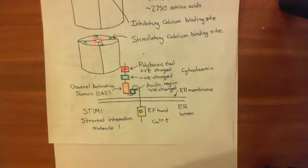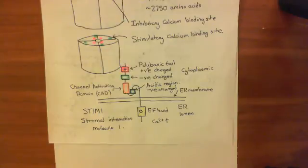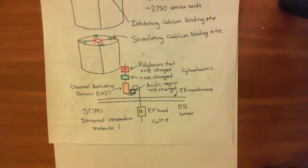We can't continue at this rate because otherwise we will eventually have no calcium left in the endoplasmic reticulum, and then we won't be able to continue with our Gq signaling pathways.